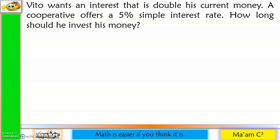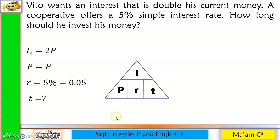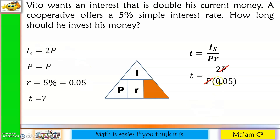Next: Vito wants an interest that is double his current money. A cooperative offers a 5% simple interest rate. How long should he invest? Since the interest should be double the principal, I equals 2P. R equals 0.05. Using T equals I divided by PR: 2P divided by (P times 0.05) — P cancels — gives 2 divided by 0.05 equals 40. It will take 40 years.